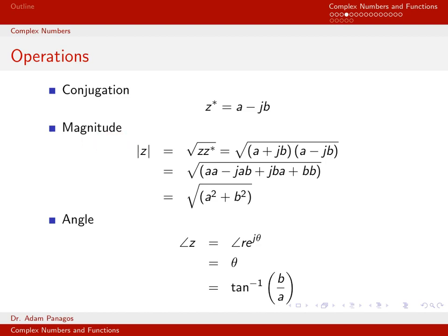We often like to take the magnitude of complex numbers. The magnitude of the complex number z we denote with these absolute value lines. By definition, the magnitude of a complex number is equal to the square root of the complex number times its complex conjugate. This serves as the definition of the magnitude of a complex number.